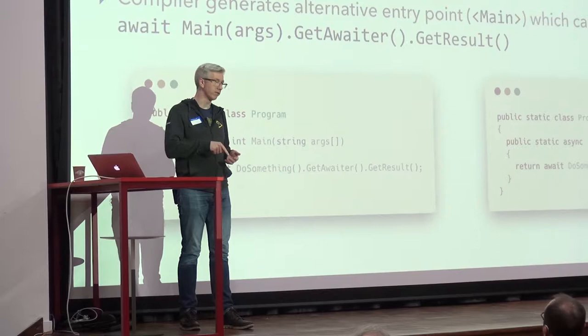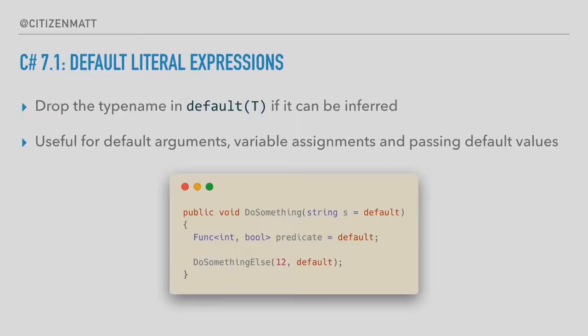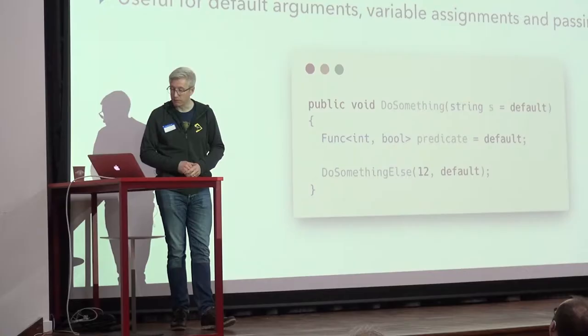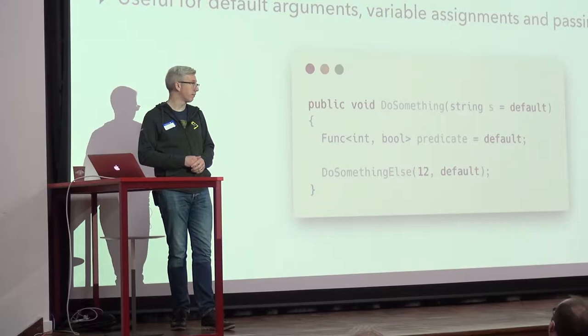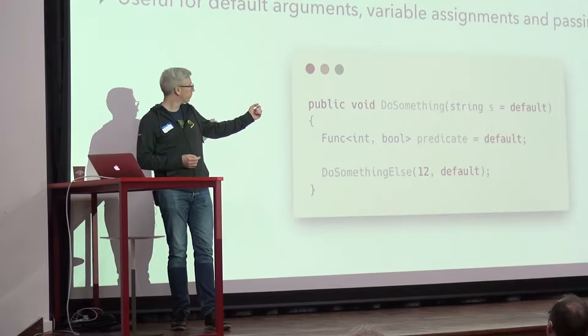Next is default literal expressions — the whole `default(T)` — how you get a default value for something, whether it's null or, for `default(int)`, a zero. This allows you to drop the type name from that expression if it can be inferred. It's useful for things like default arguments: `string s = default(string)` — what's the point of writing string there? We already know it, so we can drop it.